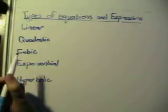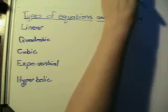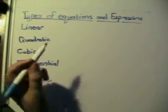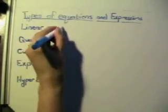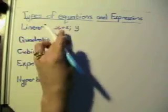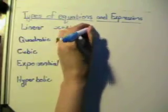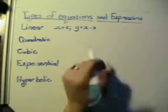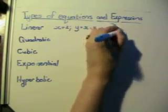A linear equation is an equation where the highest power of x is just x to the power of 1. For instance, x plus 2 is a linear expression, and y equals x minus 3 is a linear equation. Typically this gives you a graph of a straight line.